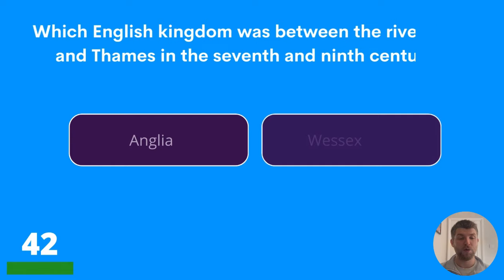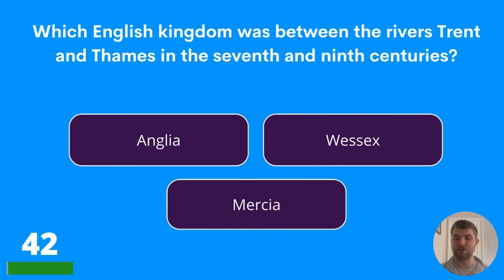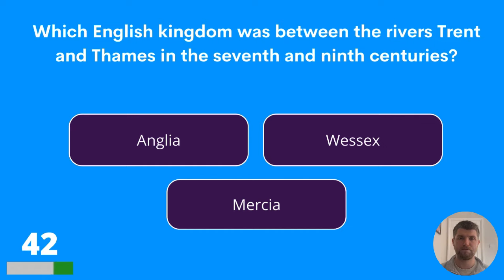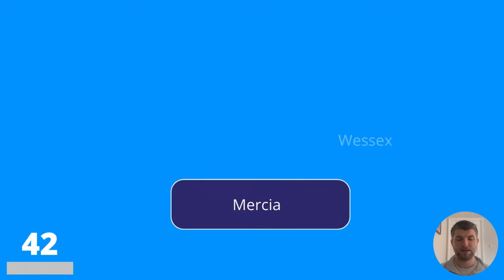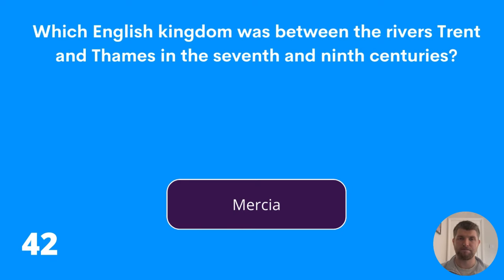Question forty-two: which English kingdom was between the rivers Trent and Thames in the 7th and 9th centuries? Is it Anglia, Wessex, or Mercia? The answer is Mercia.